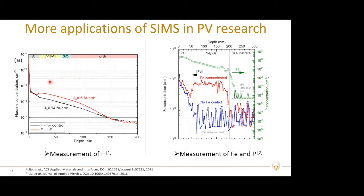The results here show SIMS profiles for fluorine — the red curve shows the sample with fluorine, while the black one shows the sample without fluorine. Additionally, a sample was gettered by phosphorous diffusion, which is expected to remove metal impurities, particularly iron. The SIMS data clearly indicate the distribution of phosphorous and iron.